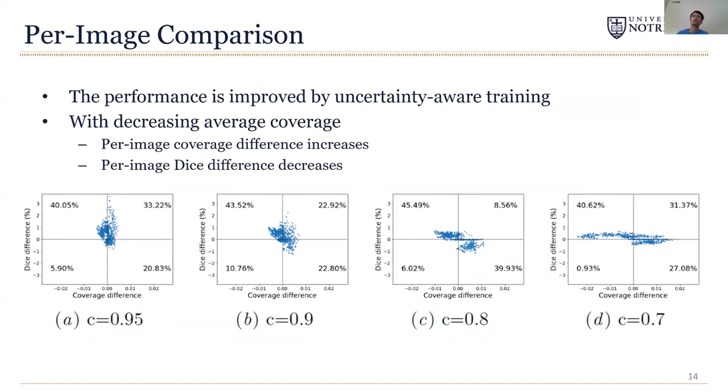The dots in the third quadrant means the opposite. The number in each quadrant is the percentage of dots in the corresponding quadrant. So from this result, we can clearly see that the performance is improved by our uncertainty-aware training. Besides, with decreasing average coverage, the per-image coverage difference increases. This is a result of different uncertainty by different methods. Meanwhile, the per-image dice difference decreases. This is because with lower coverage, most uncertain predictions are removed and the dice coefficients converge.